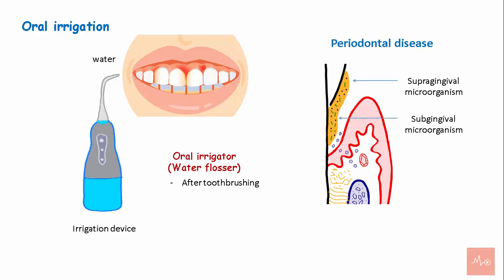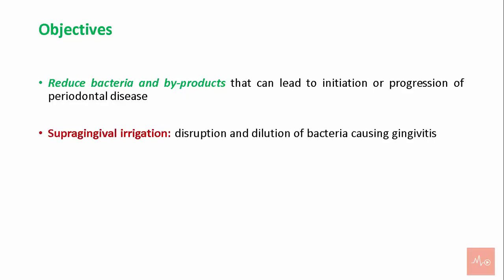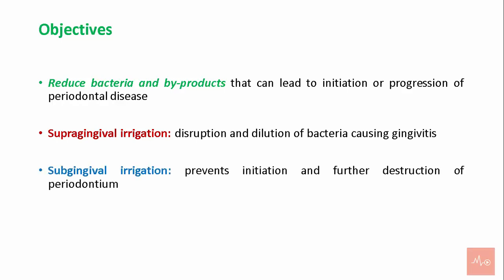Periodontal disease is caused by organisms that colonize and proliferate in supra- and subgingival regions. Oral irrigation can safely and effectively remove biofilm and improve periodontal health. The objectives of oral irrigation are to reduce bacteria and byproducts that lead to initiation or progression of periodontal disease. Supragingival irrigation is aimed at disruption and dilution of bacteria causing gingivitis, while subgingival irrigation prevents initiation and further destruction of the periodontium.